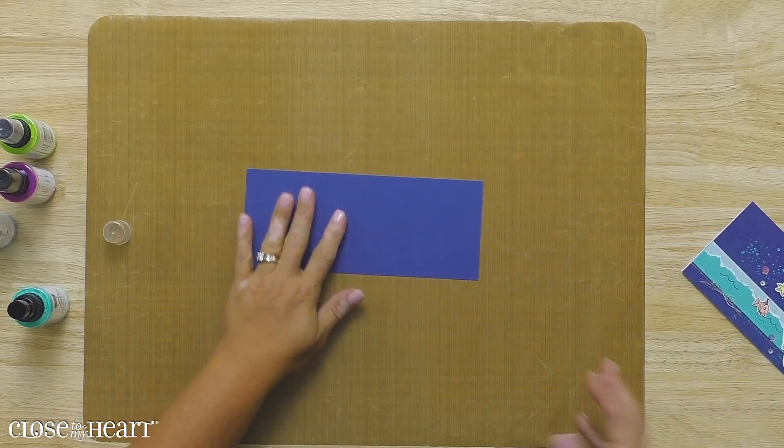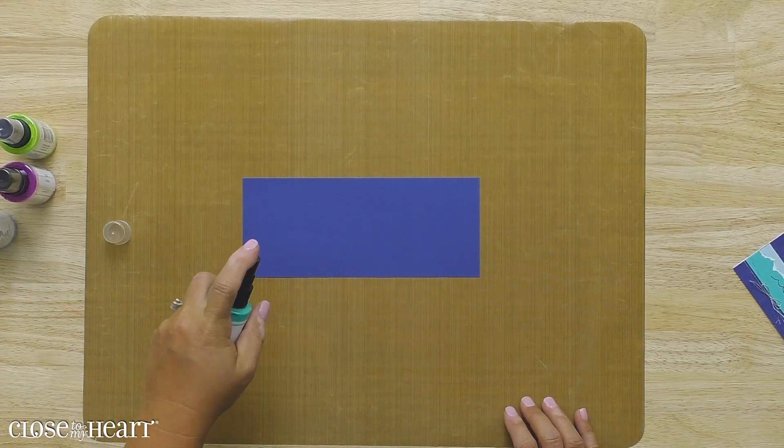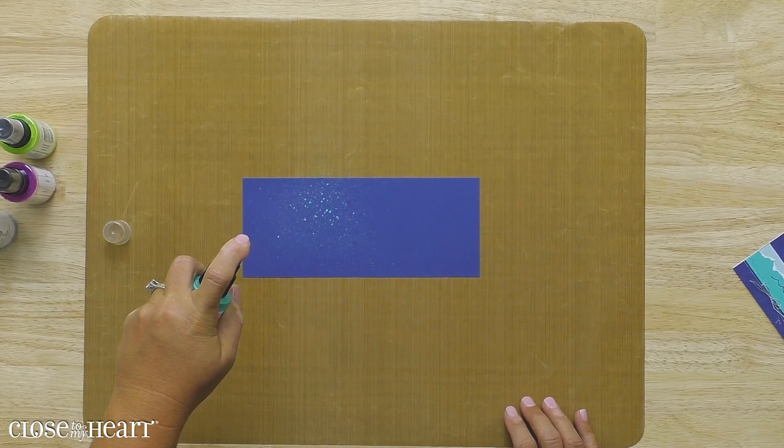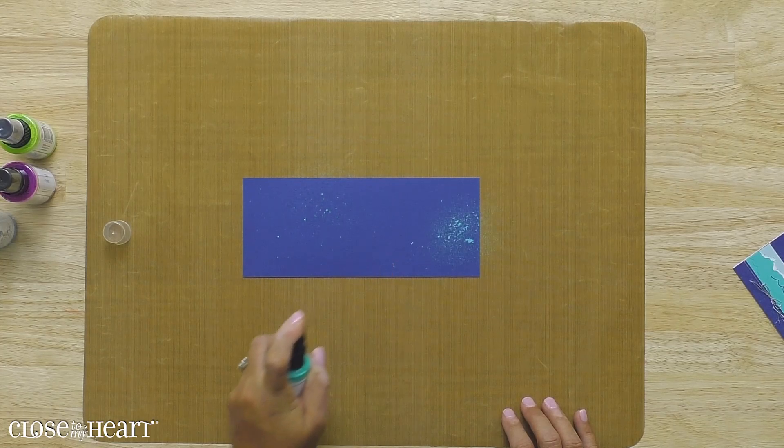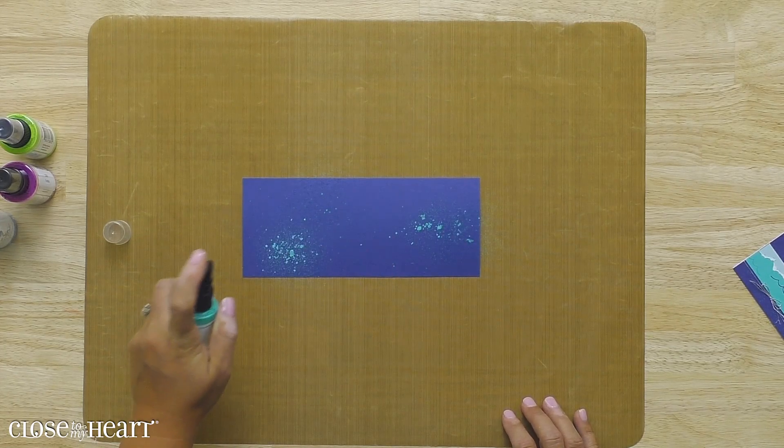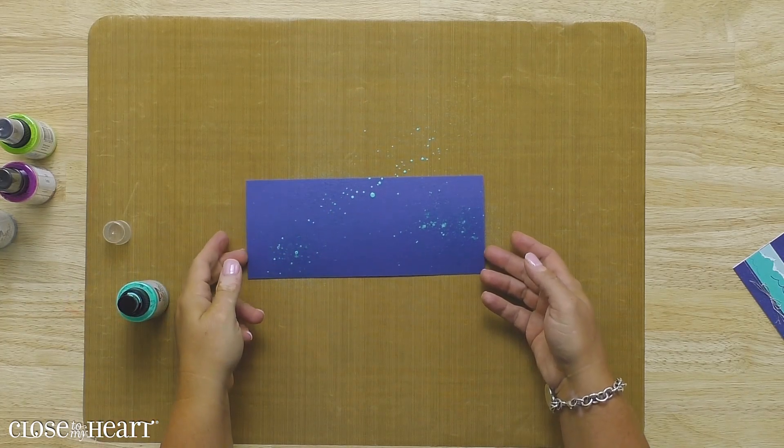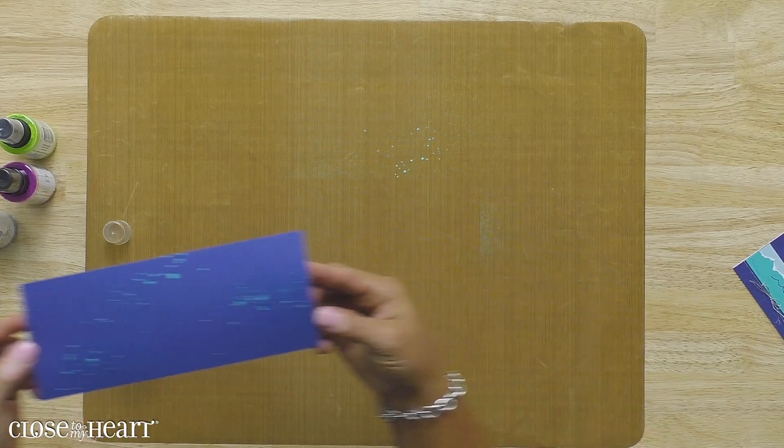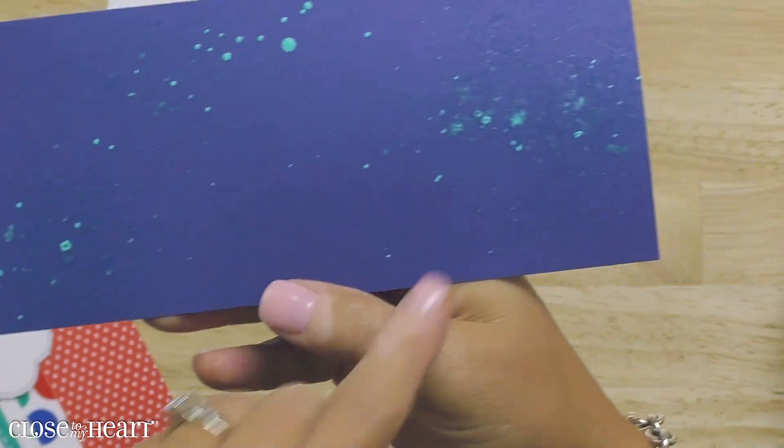So you're just going to take your darker color cardstock and we're going to use turquoise. I'm going to come about midway and squirt about a half a squirt. Then I'm going to come a little closer and squirt again, and you can add as little or as much of this as you want. I'm going to come a little higher and you can see I'm getting lots of different types of splatters by how I control my spray.